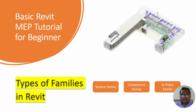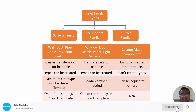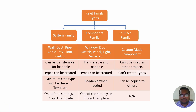Depending on the requirement, you will be using different types of families in the project. System families include wall, duct, pipe, cable trays, floor, ceilings, and roofs. These are the different system families available. Other than that, some other elements are also available as component families — for example, window, door, and switch panels, lightings.